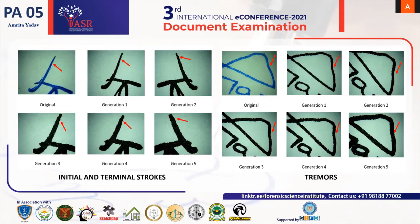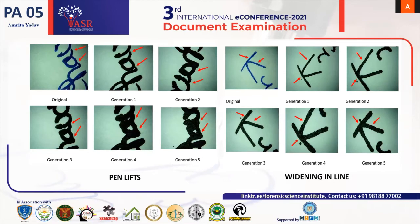The next feature is initial and terminal strokes. In the original sample, a tapered end is present, but in generations G1 and G2, the end becomes progressively more blunt through to generation five. Another feature is tremor — in the original sample, tremor is clearly present. Tremor is a lack of smoothness due to lack of skill, conscious control of the writing instrument, or is an involuntary rhythmic defect. It can be an unnatural sign symptomatic of forgery, but may also be present in genuine writing or result from conditions like Parkinson's disease or uneven writing surfaces.